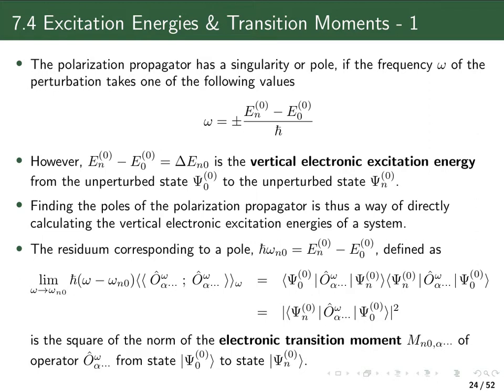If you go back to chapter three and look at the sum of states expression for the linear response function, we can see that the linear response function will have a singularity if the frequency of the external radiation is equal to the energy difference between one of the excited states and the ground state divided by h-bar. This energy difference we normally call the vertical electronic excitation energy, and it's called vertical because it's the energy of the excited state n at the same geometry as that of the ground state zero.